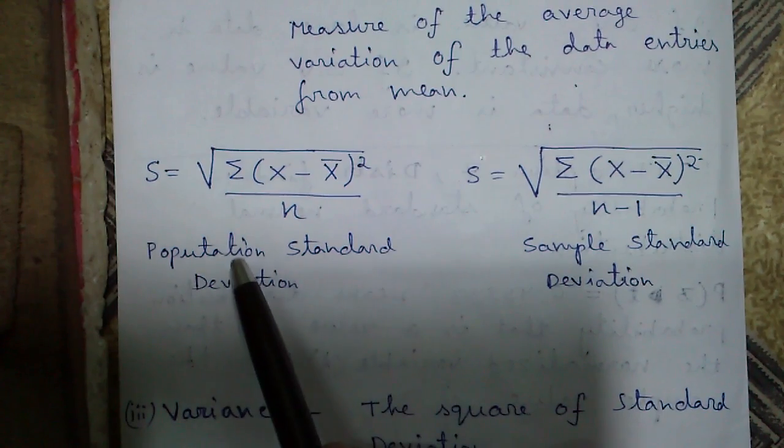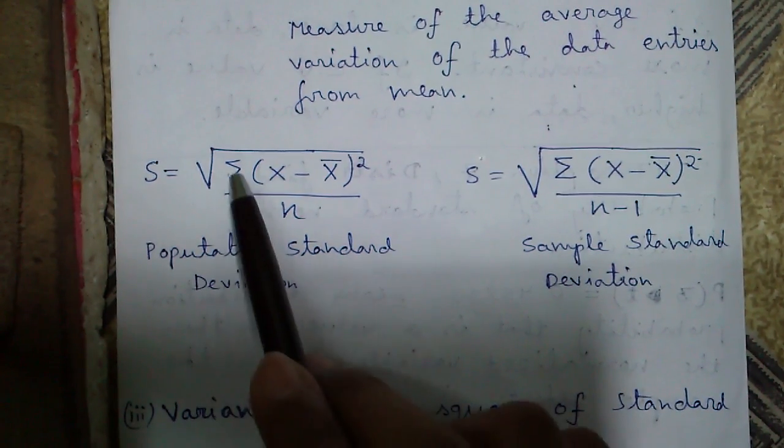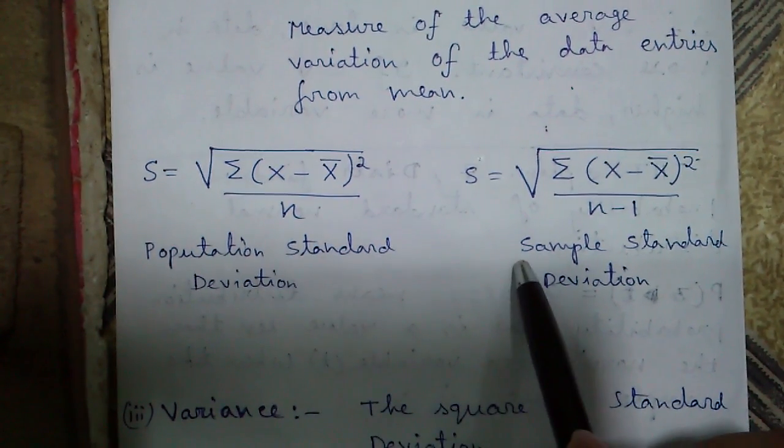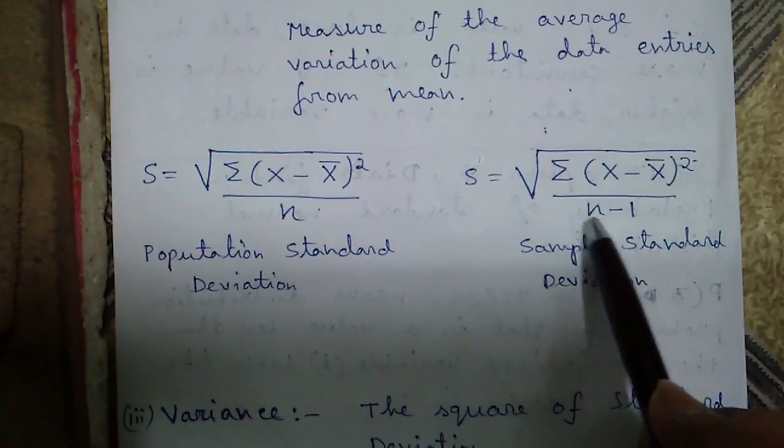Standard deviation is of two types. Number one is population standard deviation given by divided by n and second is sample standard deviation given by divided by n minus 1.